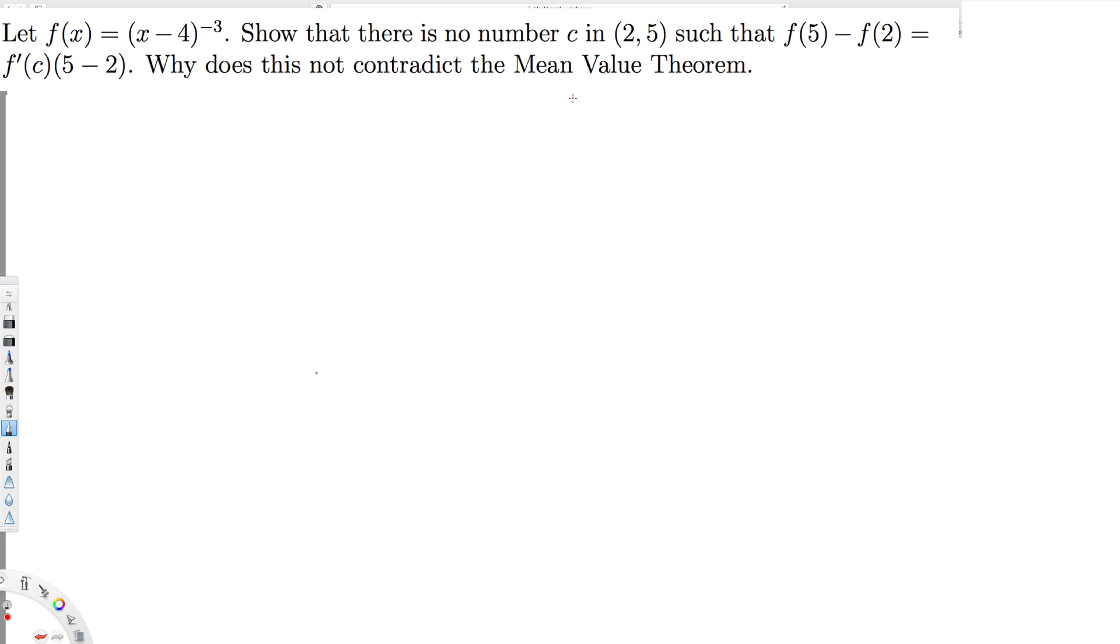And why does this not contradict the Mean Value Theorem? If you notice, this is the rearrangement of the MVT equation: f'(c) equals [f(b) minus f(a)] over (b minus a). They have just flipped this and are asking us to solve this question.